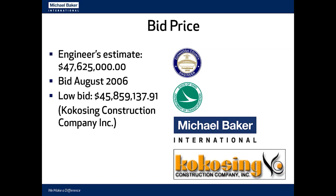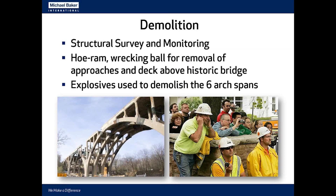The project was bid in 2006 — a time of rapidly escalating bid prices before the housing bubble burst. Despite that, we were rewarded with a low bid that came in under the engineer's estimate. The low bidder was Kokosing Construction Company, a pleasure to work with. The Ohio Department of Transportation provided oversight during construction. Construction began with demolition of the existing bridge — the superstructure was removed manually, but explosives were used to demolish the six arch spans.